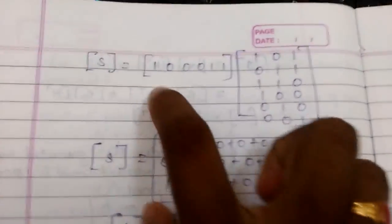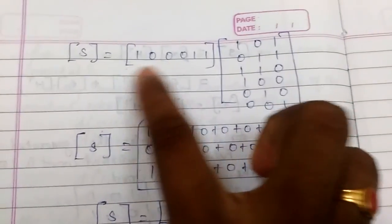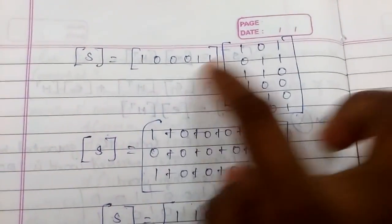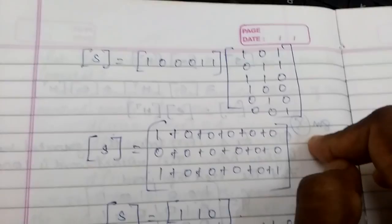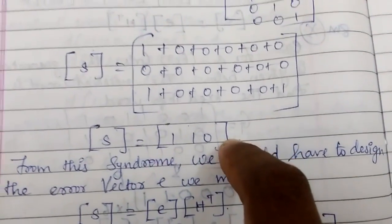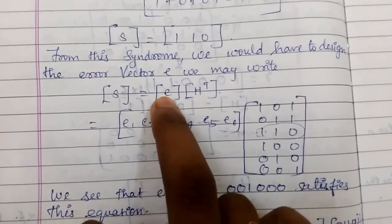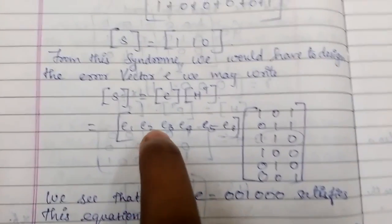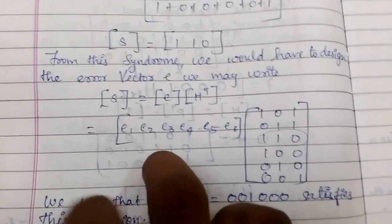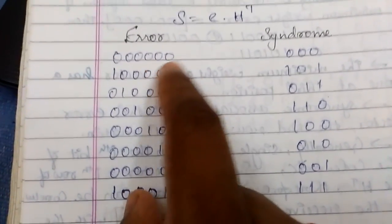The received word is multiplied by H^T: row by column for the first, second, and third columns respectively. The result gives the syndrome as 1 1 0. The next step in finding the transmitted word uses the relation: syndrome S = e × H^T, where e is the error pattern — this is the last key concept we need.